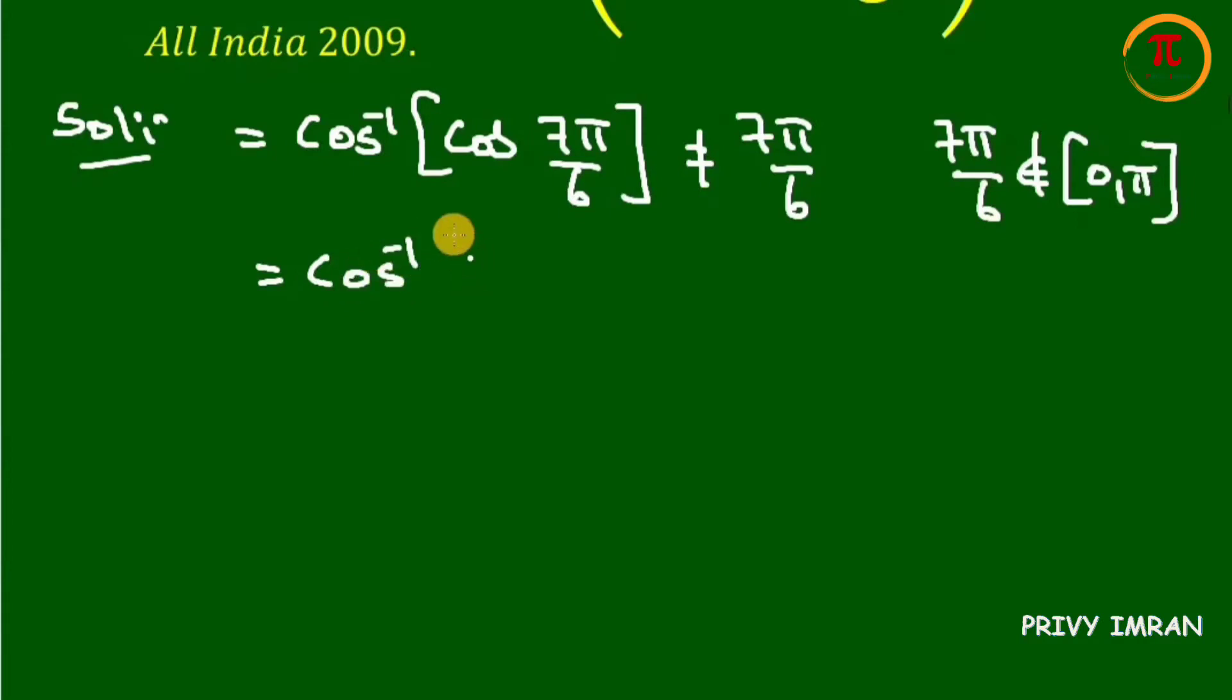Now if you observe in my next step, 7 pi divided by 6 can be written as 2 pi minus 5 pi divided by 6. This one lies in the fourth quadrant. In the fourth quadrant, cos is positive.